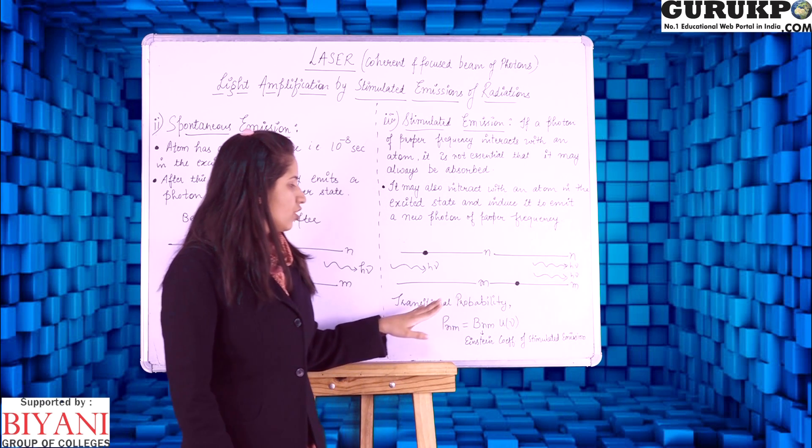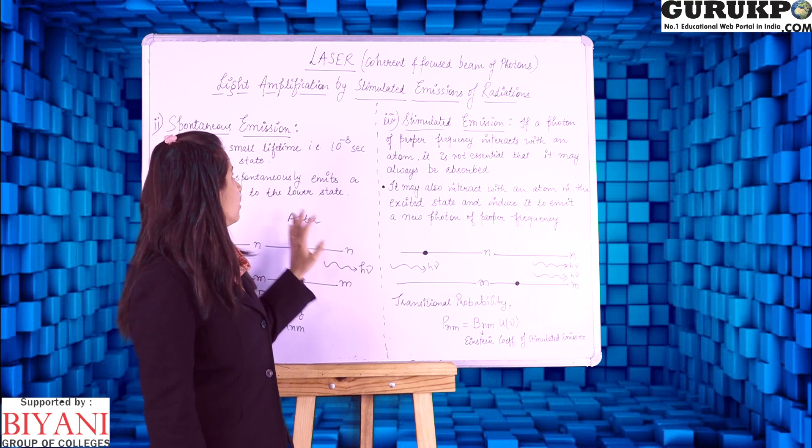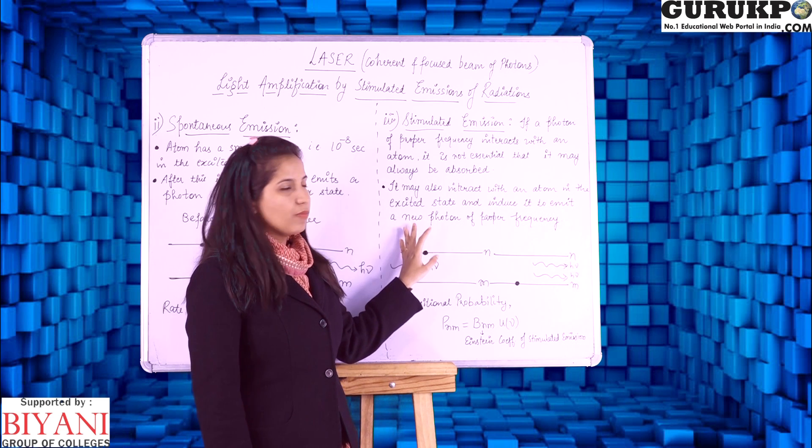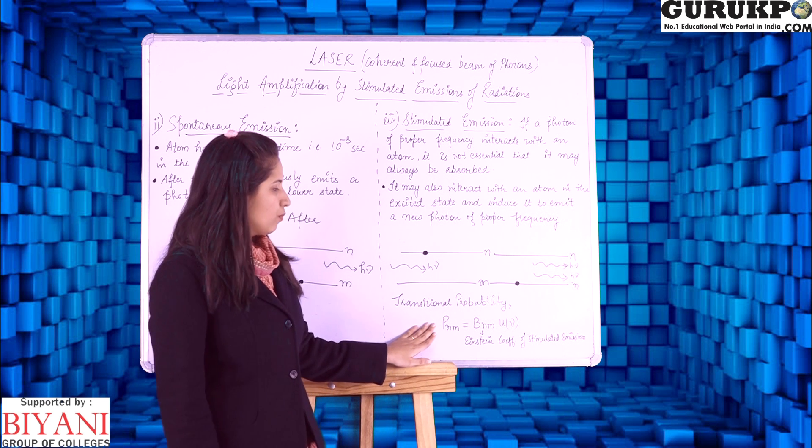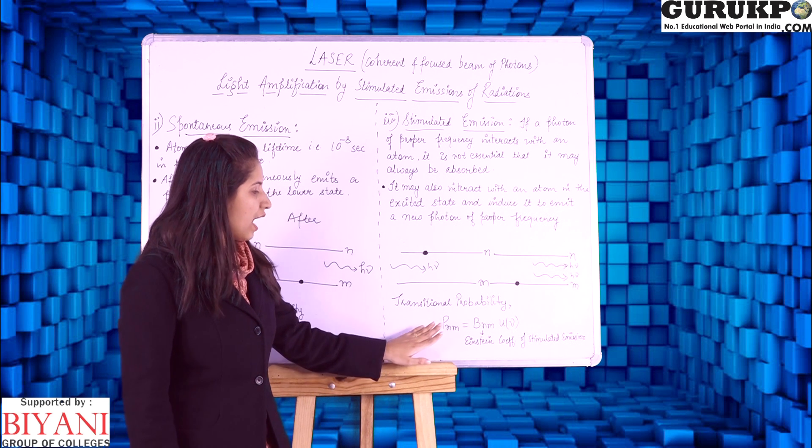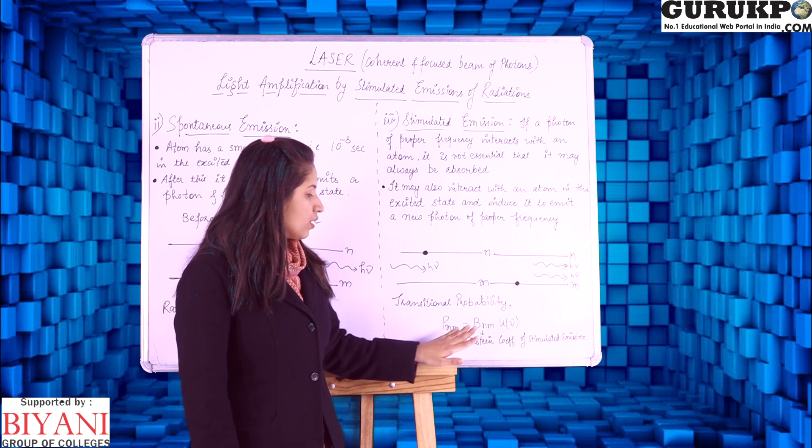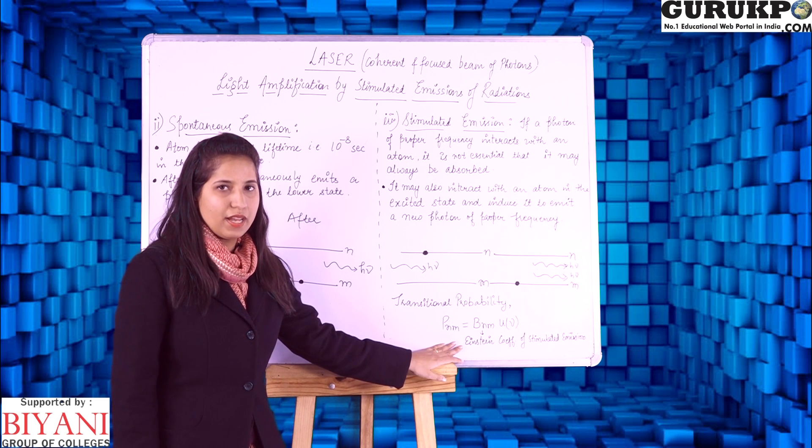Here the transitional probability as the transition going on in each and every state as in absorption as in spontaneous emission also it goes in the stimulated emission. So transitional probability here it depends upon the density of states and it is given by PNM equals to BNM mu nu. So BNM here it is the Einstein coefficient of stimulated emission.